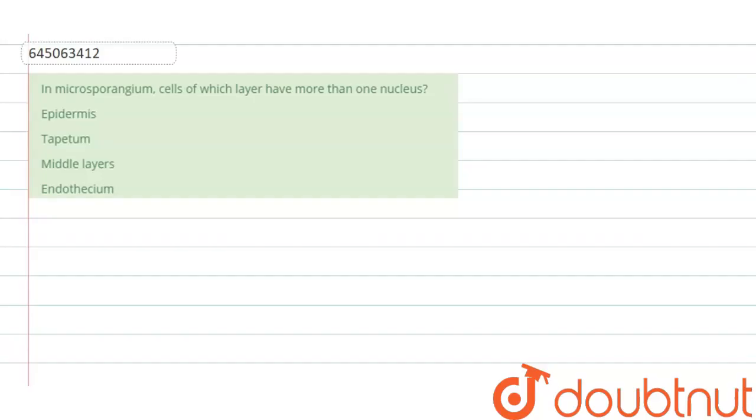Hello everyone. The question that is given over here is: In microsporangium, cells of which layer have more than one nucleus?